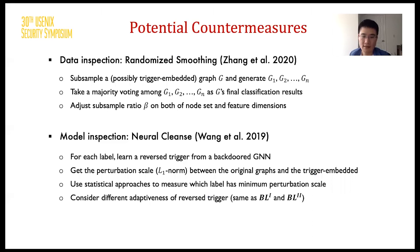Finally, we consider two lines of potential countermeasure defenses. The first is data inspection, which aims to filter embedded triggers and their influence from graphs. We use a randomized smoothing technique, which independently subsamples the graph multiple times and uses the sampled graphs for certifiable training. The second countermeasure is borrowed from the vision domain — we adapt an image backdoor defense named Neural Cleanse to the graph domain, where we first search for reverse triggers for each class, then statistically compare properties of these triggers to detect the potential backdoor target. However, both randomized smoothing and the Neural Cleanse adaptation have limited detection performance when defending against our GTA.